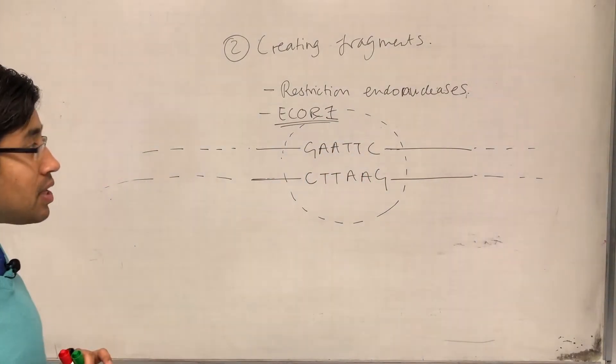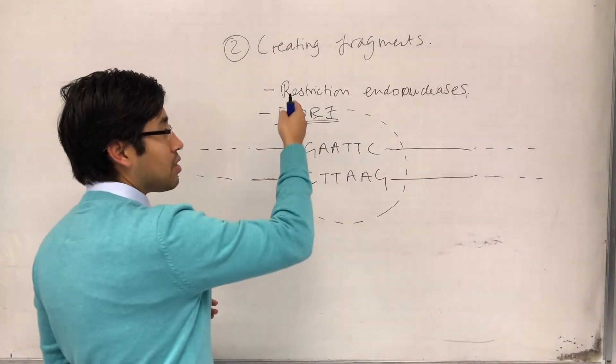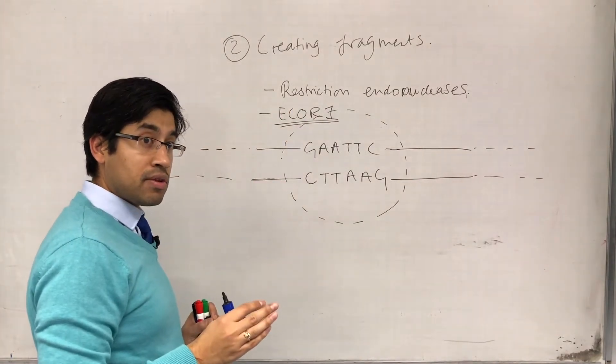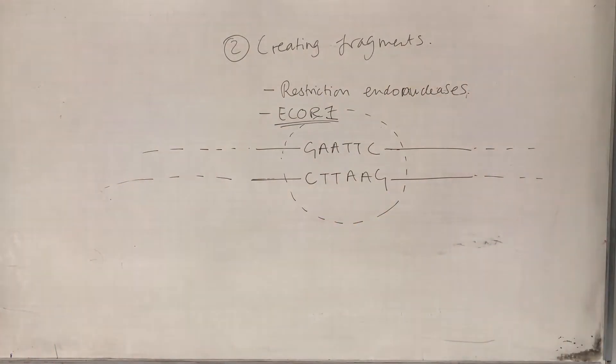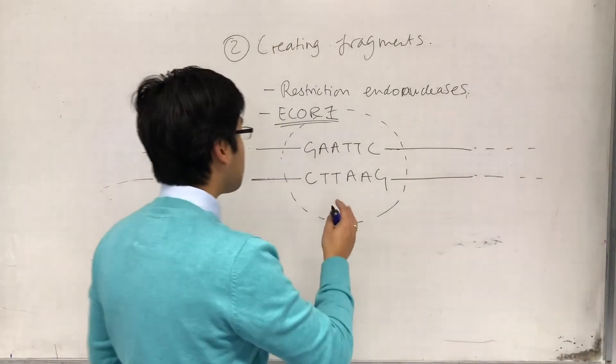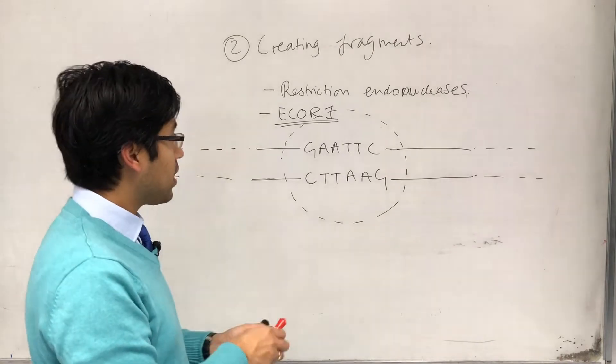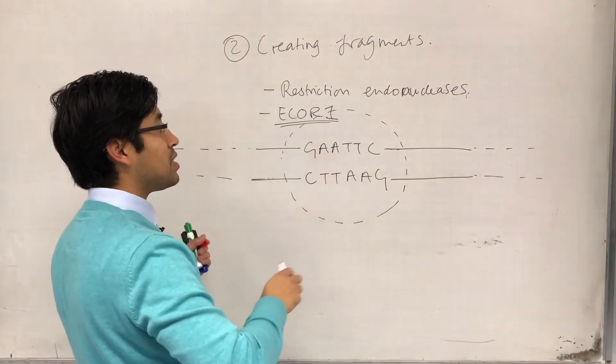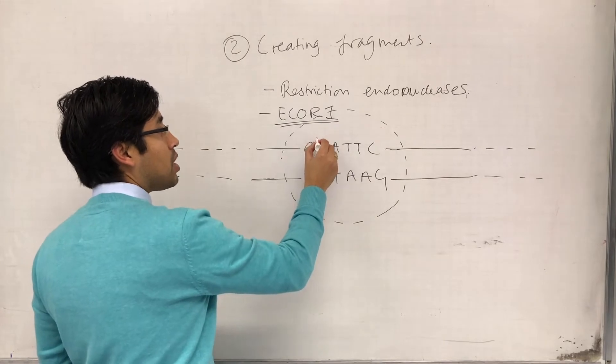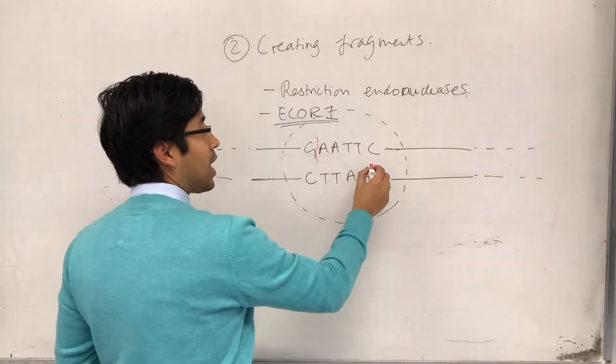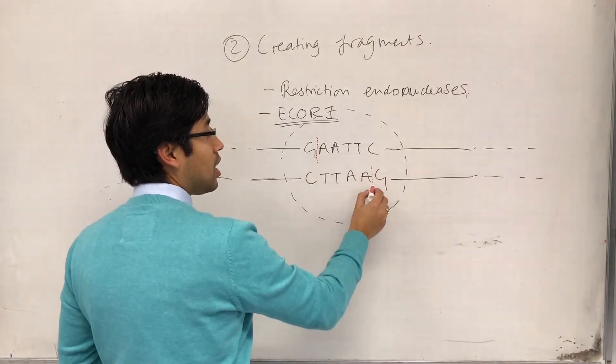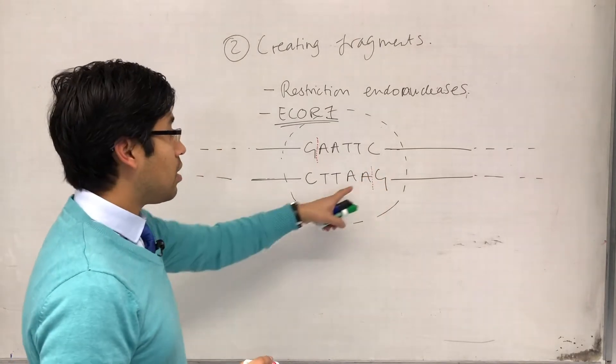And when it binds to this site, it breaks the phosphodiester bonds at a couple of places, which I'm forgetting. And I will just check after the Gs. When it binds the DNA and recognizes this particular sequence, it will break the bond between the G and the A nucleotide on that strand and the G and the A on that strand.